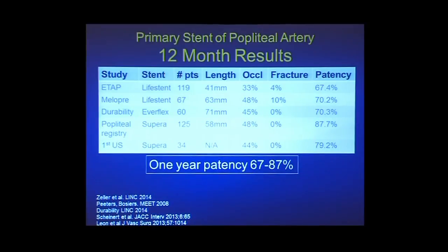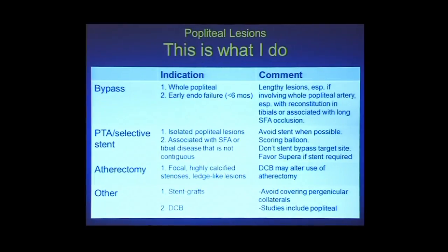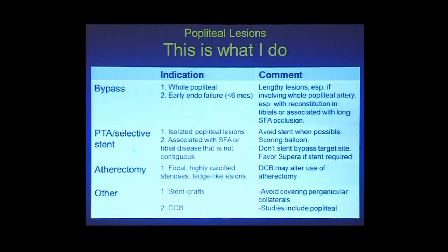Going back to what I said initially: if it involves the whole popliteal or is an early endovascular failure, I should really think about bypass. But 70–80% of the patients in my practice with a popliteal artery lesion that needs treating fall into the group that currently gets PTA with selective stenting, favoring the Supera stent. I use atherectomy selectively. And while we do occasionally use a stent graft in the popliteal, we want to be super protective of the perigenicular collaterals.